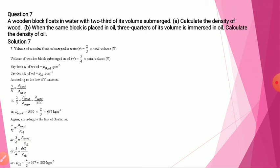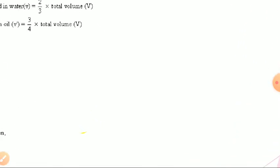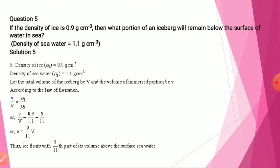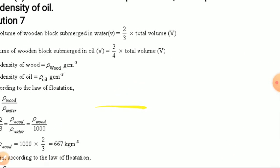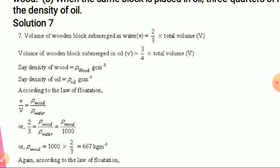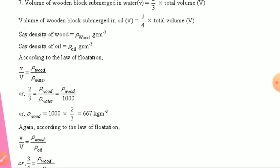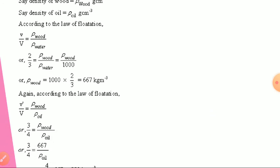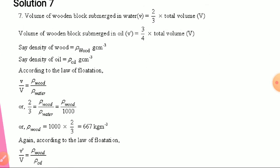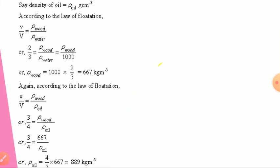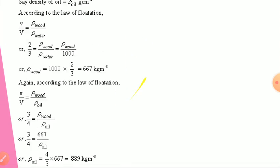Next: a wooden block floats in water with two-thirds of its volume submerged; in oil it has three-fourths of its volume submerged. Calculate the density of oil. Let density of wood be ρ_wood and density of oil be ρ_oil. According to the law of flotation, v by V equals ρ_wood upon ρ_water. Volume submerged in water is two-thirds of capital V. From this we find the density of wood as 667 kilograms per meter cube.